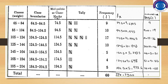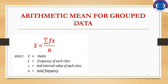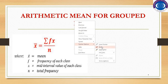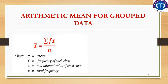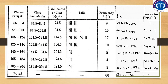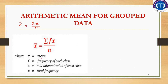Now I'm going to use this frequency distribution, which we constructed in lecture two, to find out the arithmetic mean, median, and mode. As you know, to find the arithmetic mean for ungrouped data we simply sum all data, which is Σx, and divide by the total number of observations n. Now for grouped data in a frequency distribution, we use a different formula.